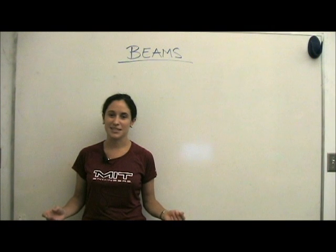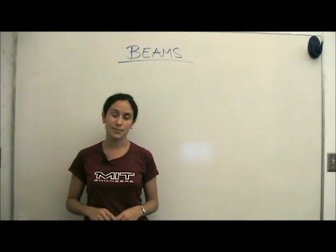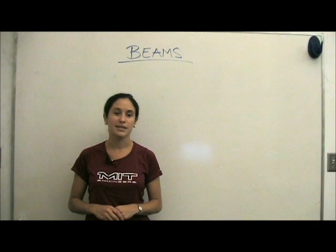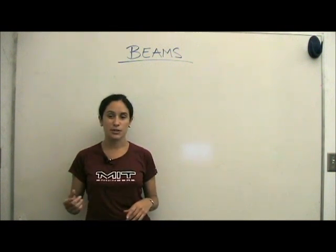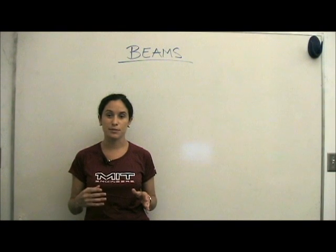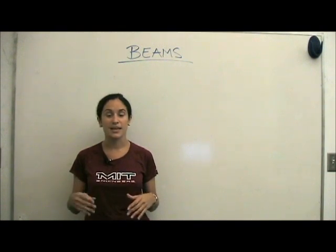It might seem like it's very easy to design beams, but if they're not designed properly, they can fail catastrophically. Take, for example, the Tacoma Narrows Bridge. In this video, what we're going to see is that when the gust of wind hit the bridge, it actually caused it to deflect and eventually to fail.